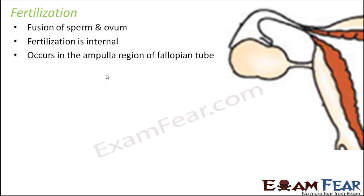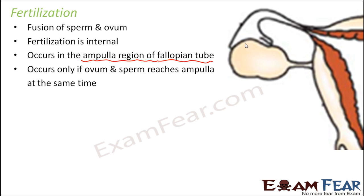Where exactly does fertilization occur inside the female body? It occurs in the ampulla region of the fallopian tube. The egg released from the ovary reaches the ampulla region — this is the infundibulum and this wider portion is the ampulla. The sperm enters through the vaginal opening and finally travels to reach this place. Fertilization occurs only if the ovum and sperm reach the ampulla at the same time, and both need to be alive. The ovum remains alive for around 24 hours after release.